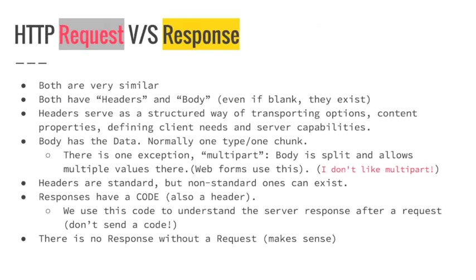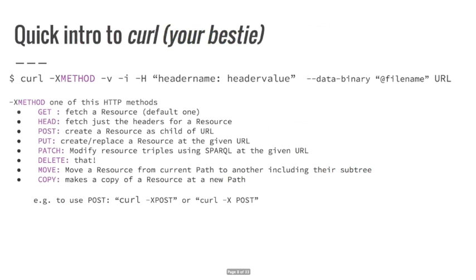Headers are very important and they're standard. Non-standard headers exist and can coexist, but we will be dealing primarily with standard headers because Fedora needs to know what we are asking for. Responses always have a code, which is inside a header and allows you to understand what Fedora did with your request. Numbers in the 400s mean some type of error. The 200s - 200, 201, 204 - mean success. And the most basic rule: there is no response without a request. The server sends nothing if you don't ask for something.